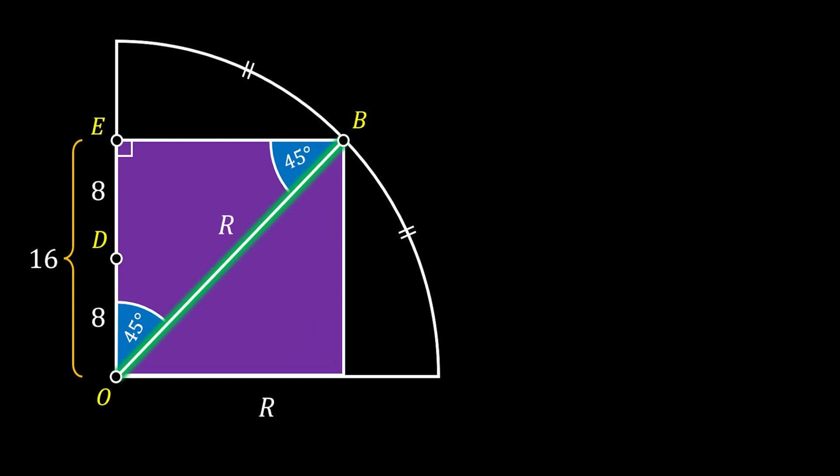Line EB must also equal 16, since that is the side of our square. More importantly, the radius of this quarter circle represents the diagonal of this square, so its length equals 16 times the square root of 2.